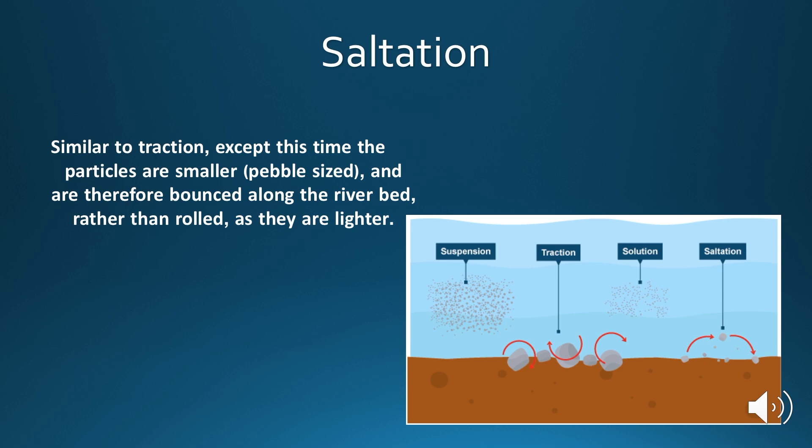Second is saltation. Saltation is similar to traction, but this process involves the movement of smaller particles that are often pebble-sized. These are bounced along the riverbed rather than rolled, and this is due to them being smaller in size and therefore lighter. The water has enough strength and energy to bounce them rather than just slowly roll them.